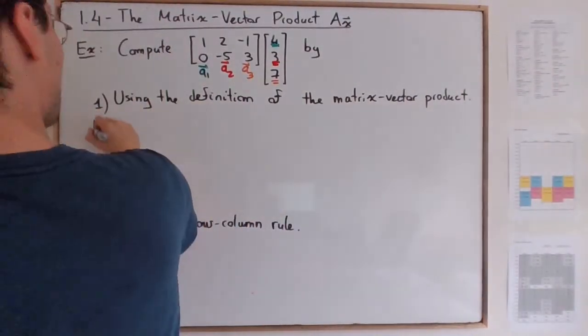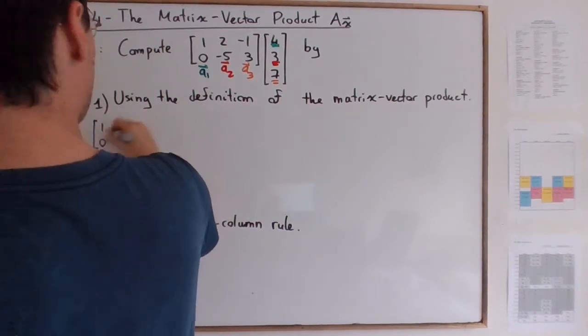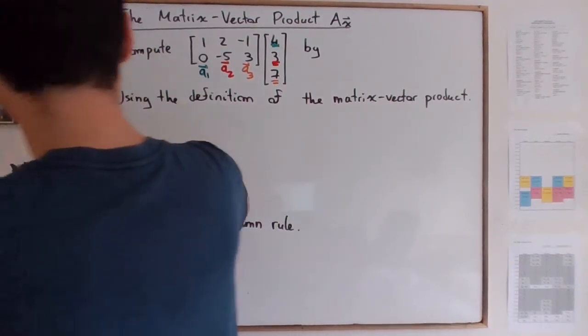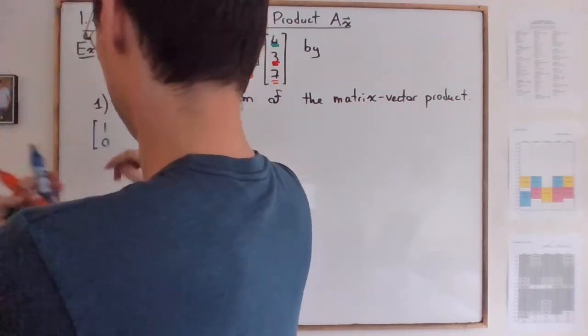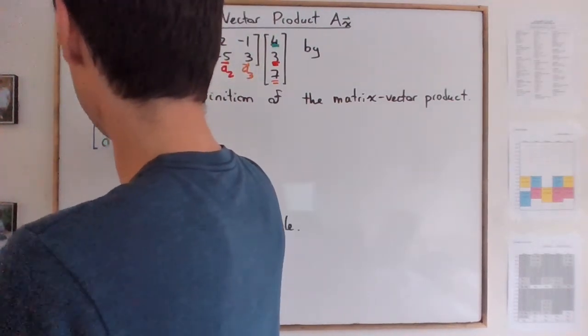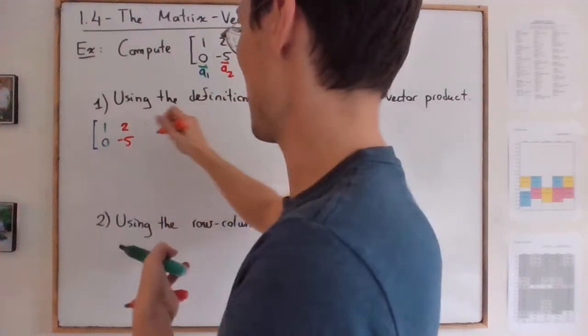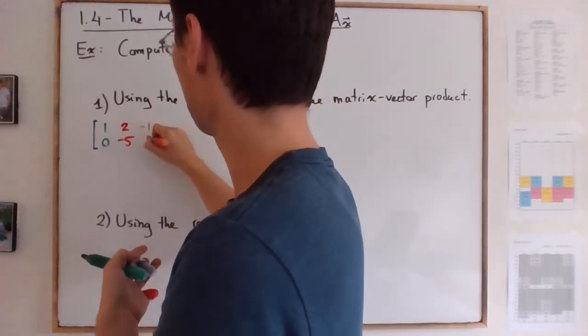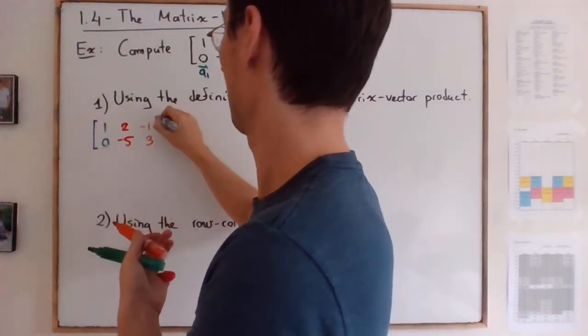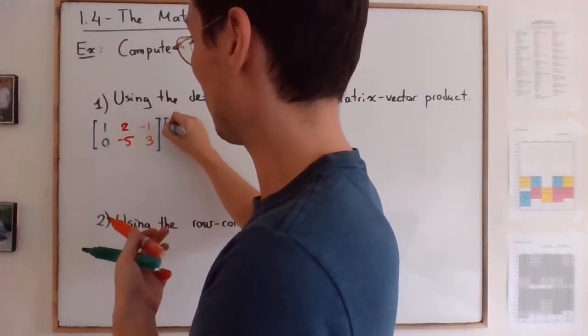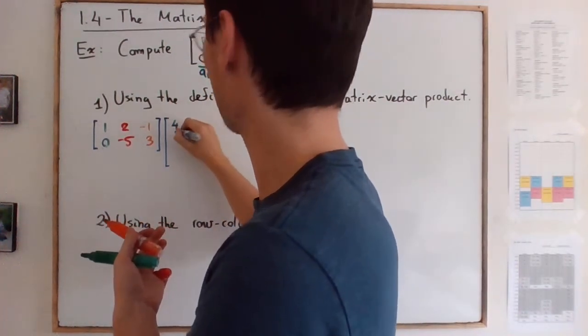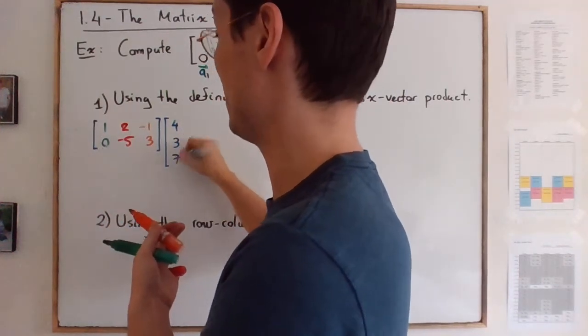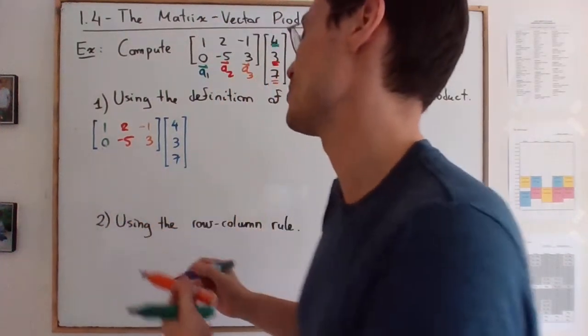In other words, you have 0, 1. I will start color coding right away. So 0, 1, then we have 2, negative 5, and negative 1, 3. So 3, multiplied by 4, 3, 7. It's a dangerous association to do.